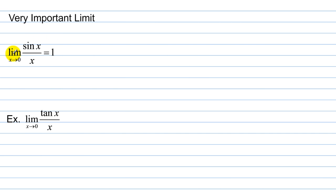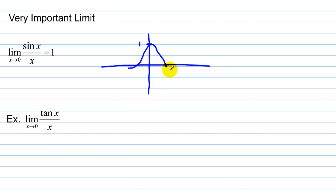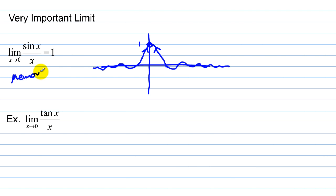We have a very important limit: the limit as x approaches 0 of sine x over x equals 1. If we graph this function, it approaches a value of 1. It oscillates and approaches 0 as x goes to infinity and negative infinity. There is a hole at x = 0, but the limit is still 1 — the graph approaches 1 from both sides. You need to memorize that the limit as x approaches 0 of sine x over x is equal to 1.